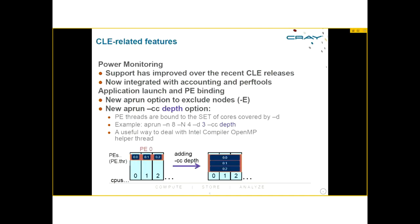A couple of things have also changed in the ALPS environment relating to how you launch an application. One is fairly trivial — you can now exclude nodes from the set chosen by APRUN, which is more interesting to benchmarkers wanting to hit or avoid a specific node. The second is that when you launch an application with APRUN, there are various rules describing how the application is bound to the CPUs available on a node.